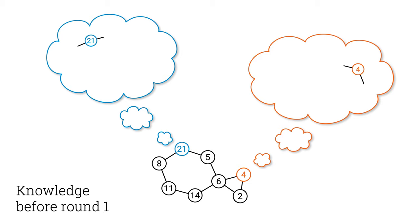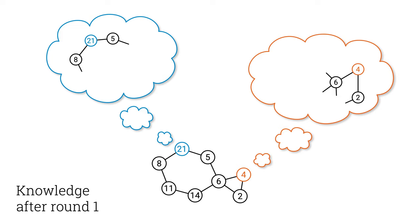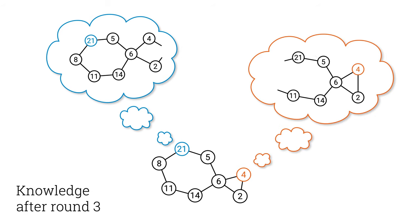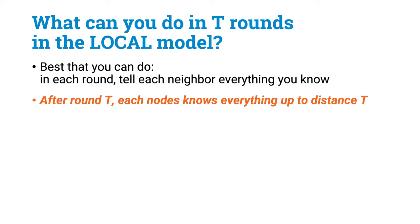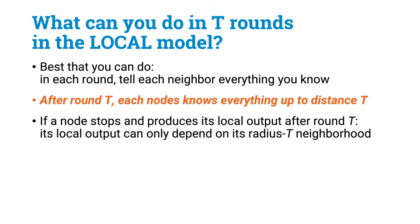If everyone tells this to each neighbor, everyone will know who their neighbors are. So after one round, all nodes are aware of their radius-1 neighborhoods. In the second round, everyone tells this to all their neighbors, so everyone learns the radius-1 neighborhood of each neighbor. Putting together this information, you will have a full picture of your radius-2 neighborhood. And you continue this way: after round 3, everyone knows their radius-3 neighborhood; after round 4, everyone knows their radius-4 neighborhood. So at best, in t rounds you can learn everything up to distance t, and nothing more.